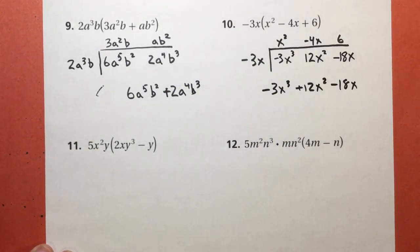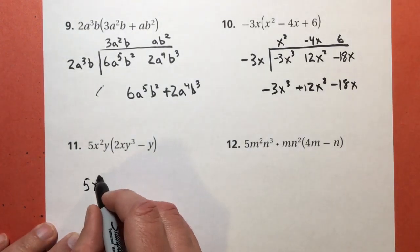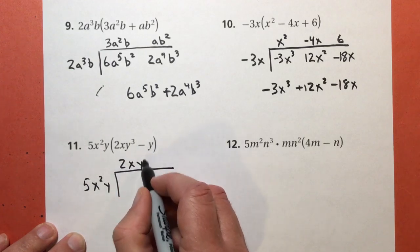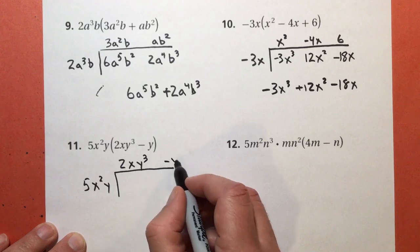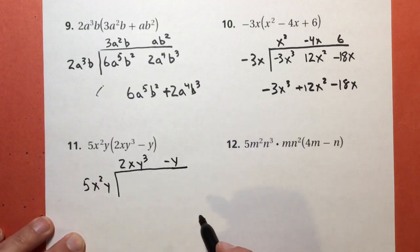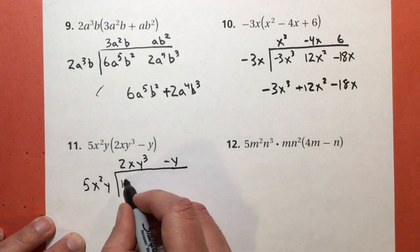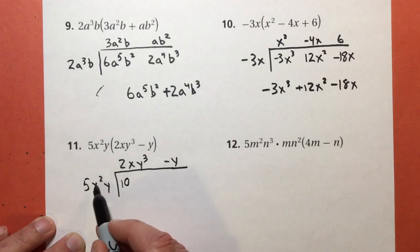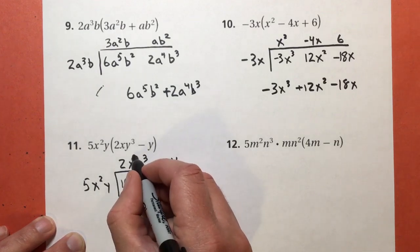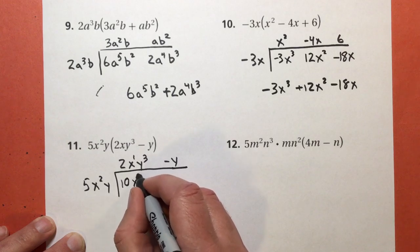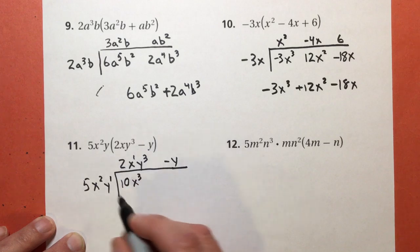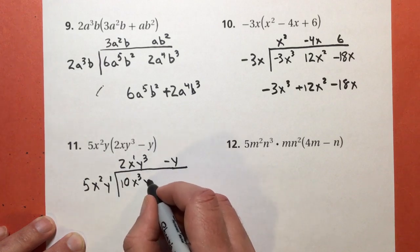As always, if I'm going too fast, just pause it and rewind it. 5x to the second y, 2xy to the third, subtract y. Alright, 5 times 2 is 10. x to the second times another x. I'll put the 1 there. 2 plus 1 equals 3. x to the third power. y times y to the third. I'll put the 1 right there. 1 plus 3 equals 4. y to the fourth power.